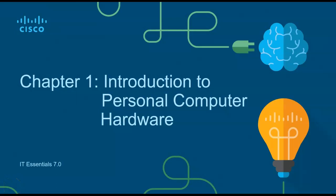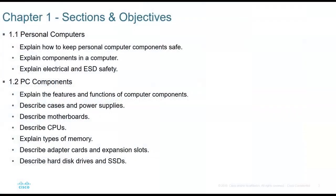IT Essentials 7.0 starts with an introduction to personal computer hardware. The chapter objectives include explaining personal computers, how to keep PC components safe, what the components in the computer are, and a discussion of electrical and ESD safety.